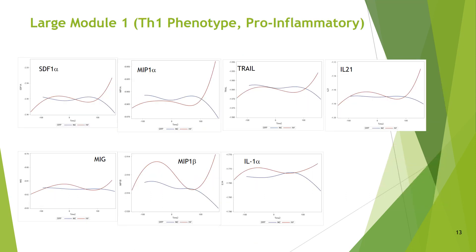Let's now examine the modules in more detail. We have the smooth time curves for each of the component analytes, separate for each group, with immunization in blue and infection in red. The seven component analytes of Module 1 mostly correspond to the T-helper 1 phenotype, therefore a pro-inflammatory response. The trajectories are rather similar for most of the markers, and at the end — that is, at recovery or the return to a new healthy state — markers of the T-helper 1 phenotype after immunization and infection go in opposite directions.